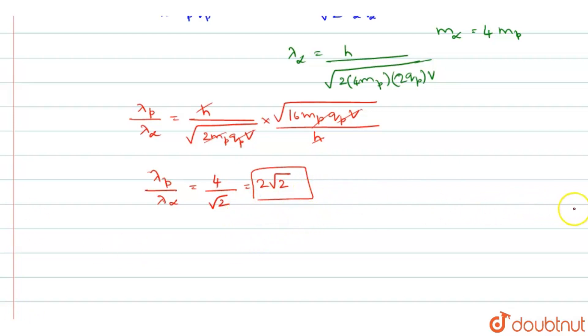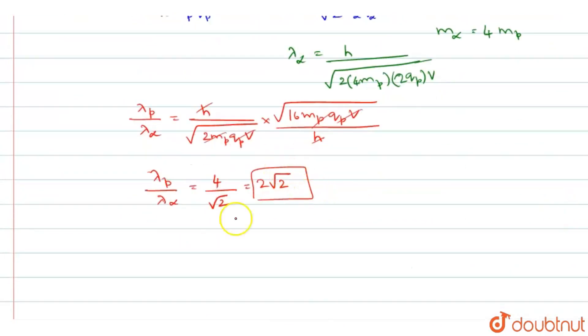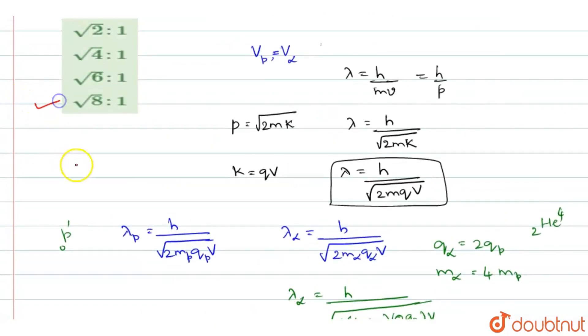Or according to the given choices, you have root 8 is to 1. So 2 root 2 can also be written as root 8. So root 8 by 1 also you can write it. So among these, option 4 is the right answer.